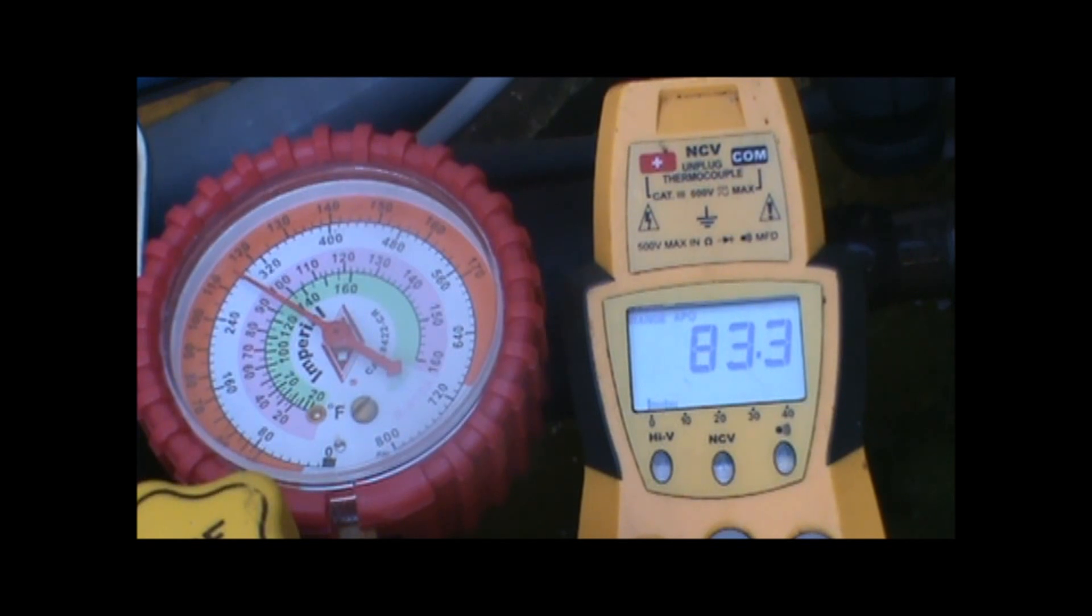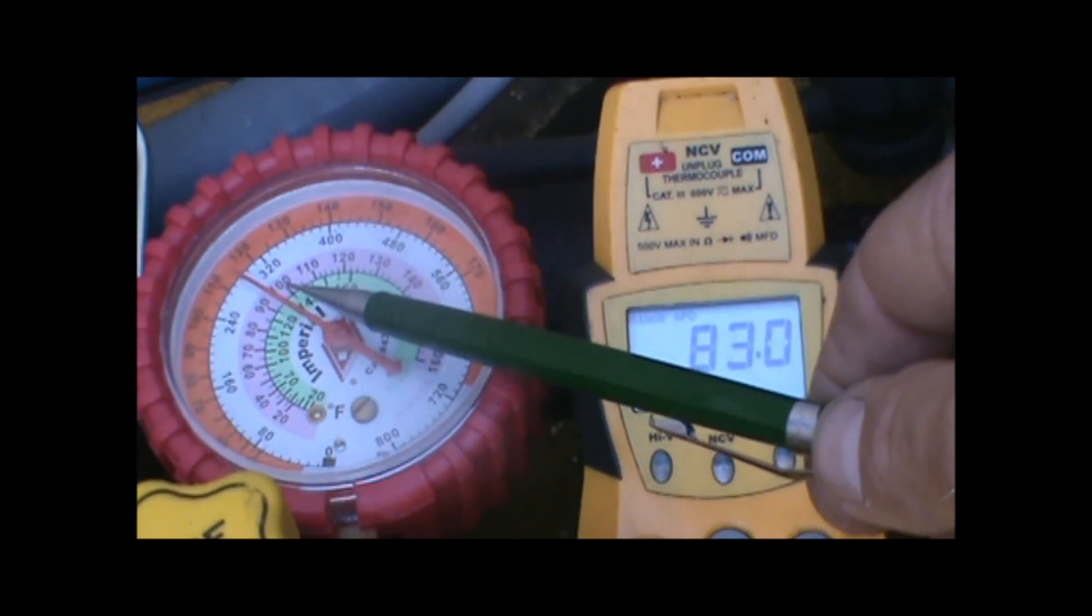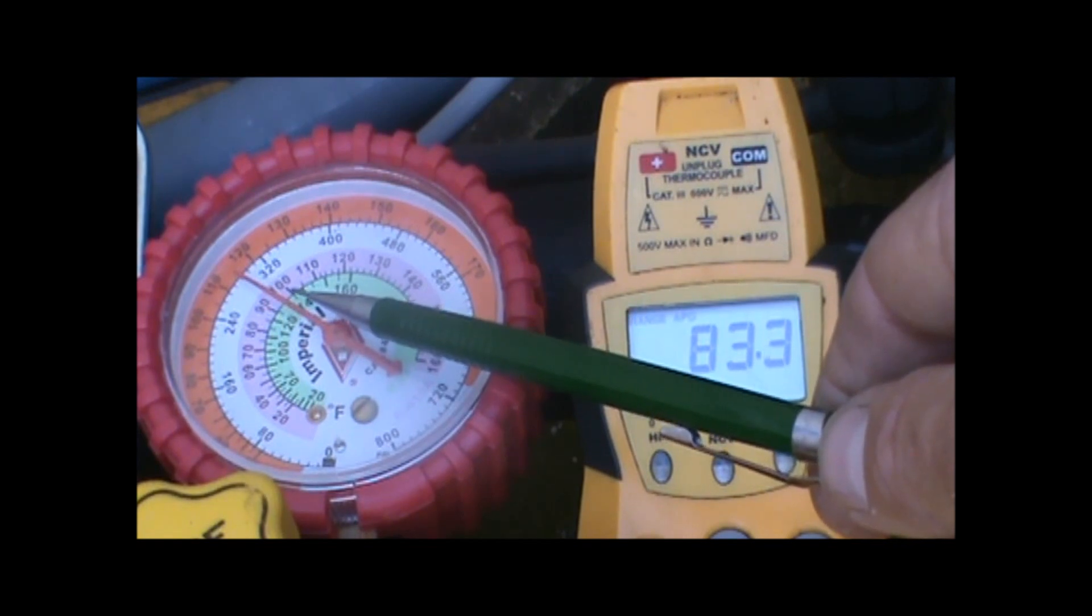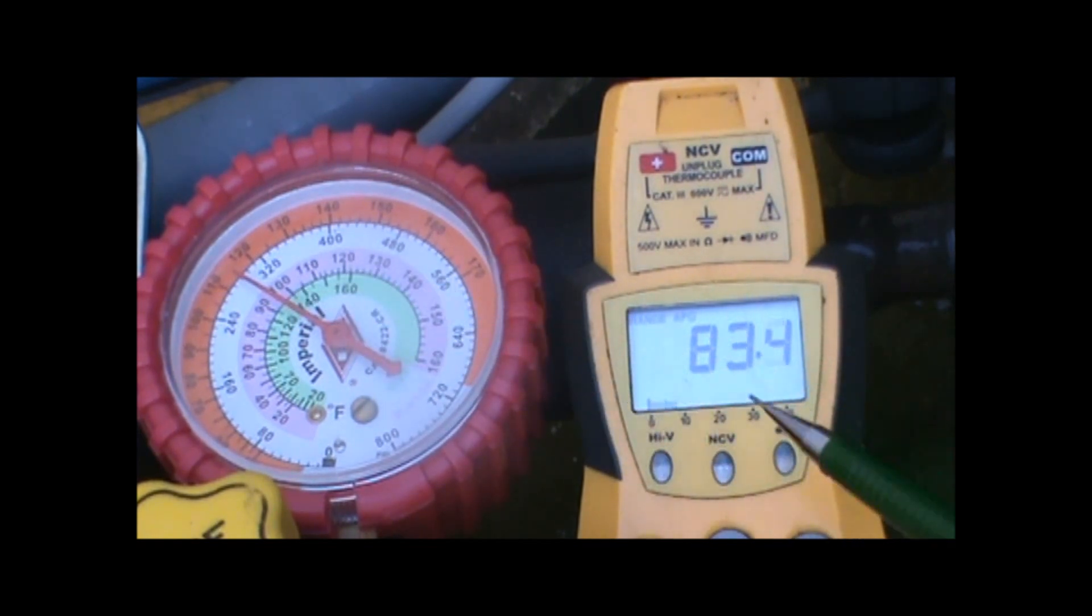So once again, sub-cooling: we measure the saturation temperature as indicated on the gauge, and from that we subtract the actual physical temperature of the high side refrigeration line to get the sub-cooling. That is how you measure the sub-cooling.